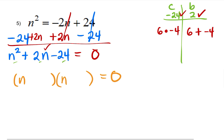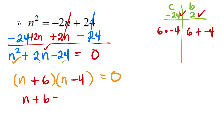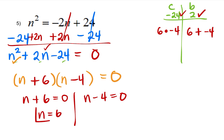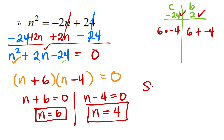So I can set up my factors: n times n is n squared, and using the factors I found, plus 6 and minus 4, giving N plus 6 and N minus 4. Isolating the variable n: N plus 6 equals 0 and N minus 4 equals 0. Taking the inverse — I made a correction here: inverse of positive 6 is negative 6. So the solution for this problem is negative 6 and positive 4.